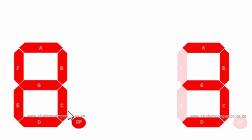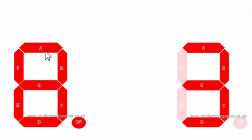For example, if I want to display the digit 8, then I'll have to switch on all 7 LEDs. These bars are normally referred to by letters A to G. The top bar is A, then B, C, D, E, F, G, then the decimal point.